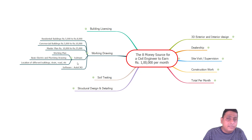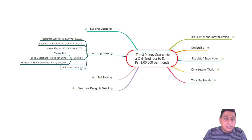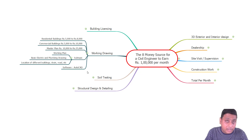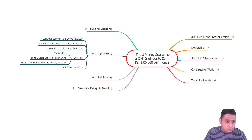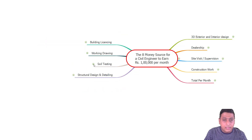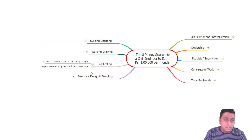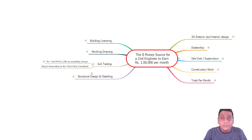On average, getting one to two projects per month — a mix of residential and commercial — you can earn around 20,000 to 25,000 rupees per month. The software used for all these drawings is AutoCAD.